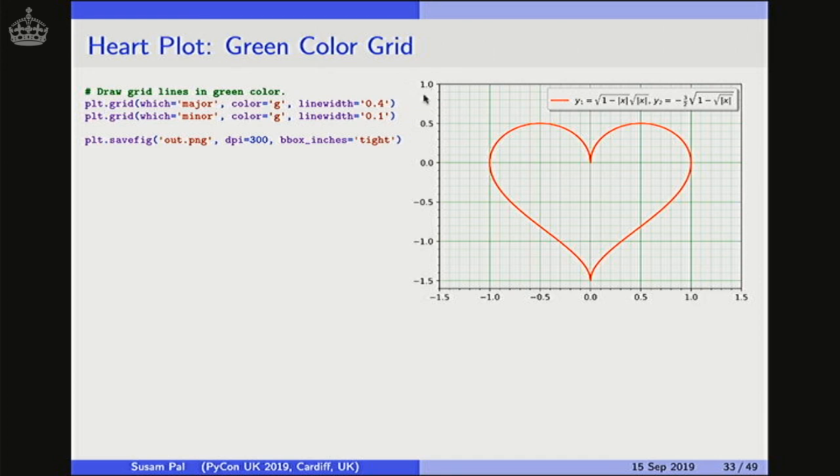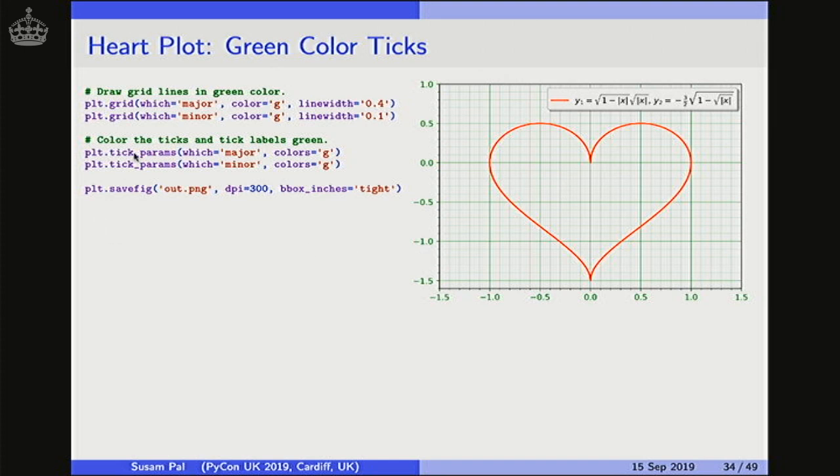Next I want to make these tick labels as well as tick lines also green in color. For that I will be using the tick_params function calls. And once again I am calling it twice, once for major tick params, once again for minor tick params. I am coloring them green. So I have got something like this.